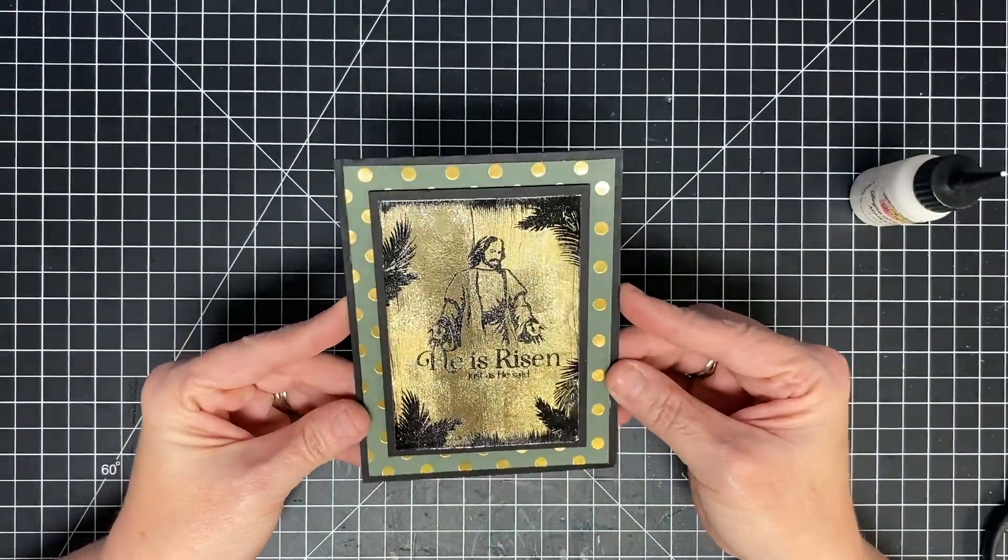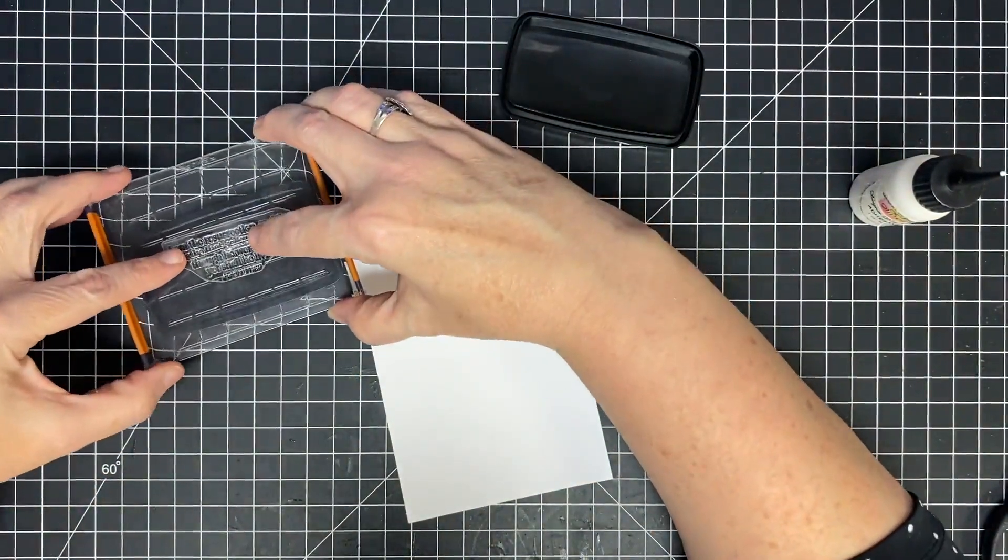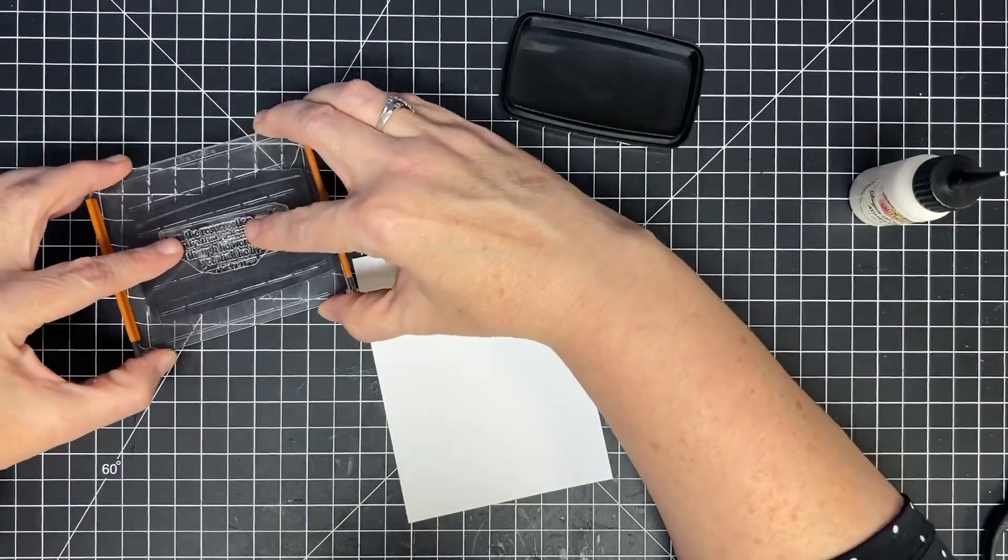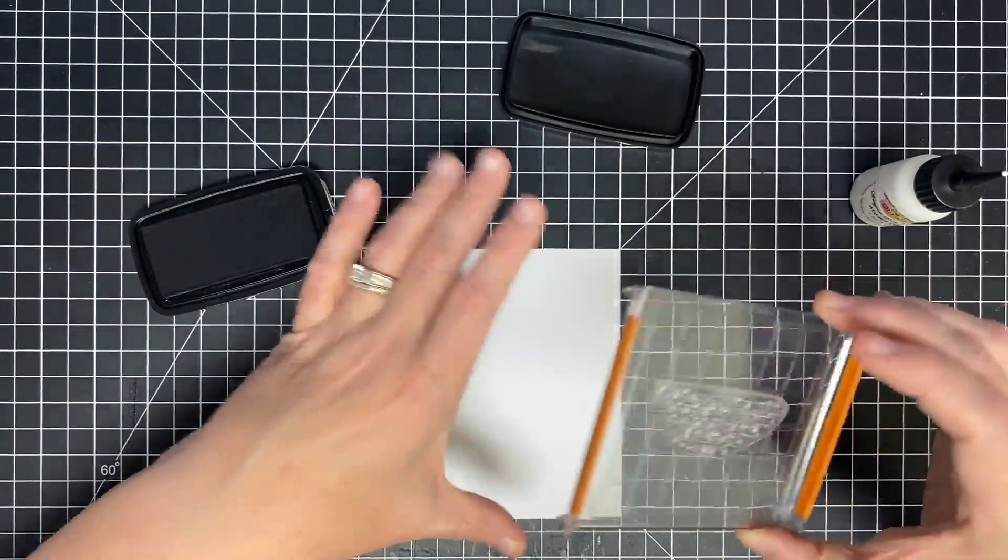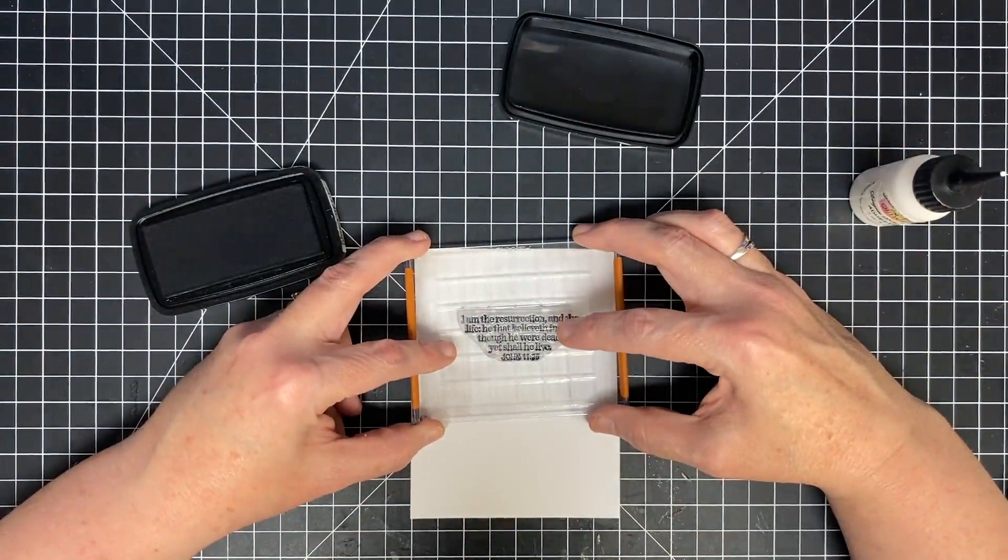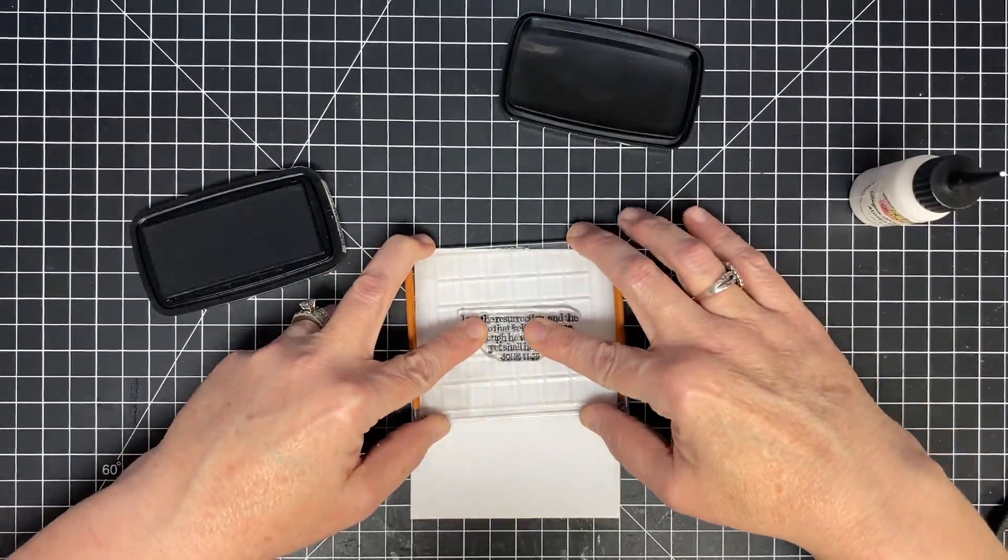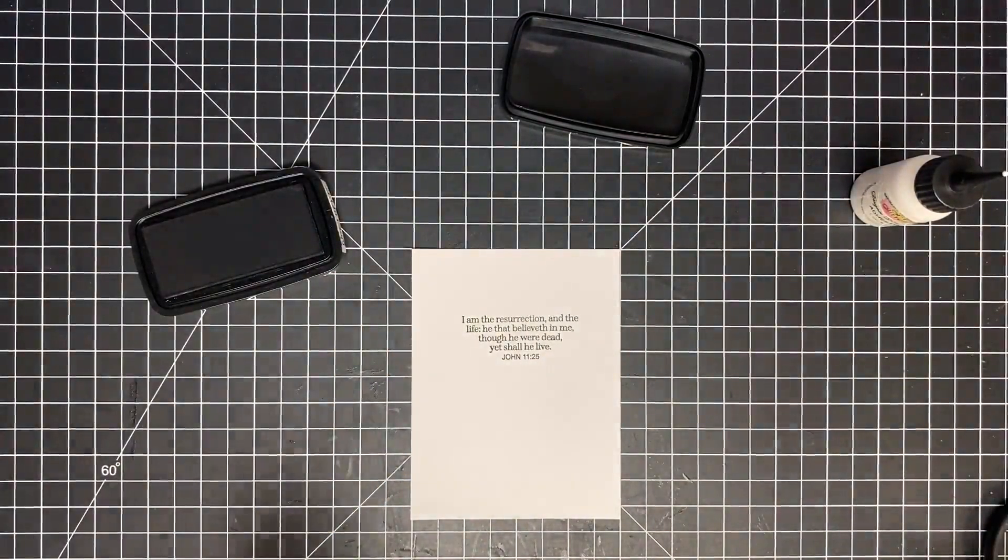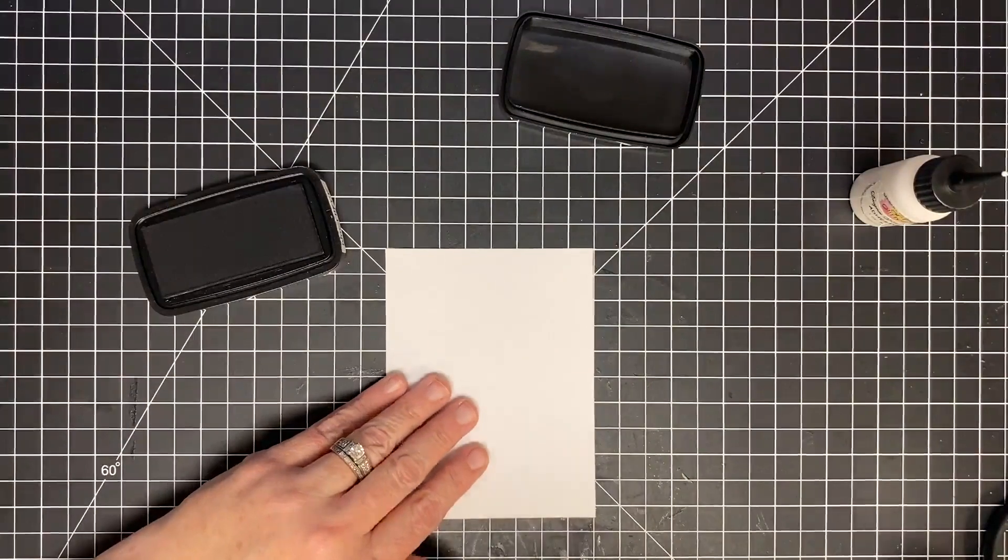And then we're going to put a piece on the inside as well. Now on the inside, I'm just going to use some VersaFine Clair Nocturne ink. And I'm going to stamp the scripture from the set right in the middle. I did not mount this straight on my block, so it's kind of hard for me to get it straight on the page. I'm hoping I got close. Good thing is if I didn't, I can flip it over and do it again. I'm a little crooked. I'm going to flip that over and do it again. We'll glue that part down. Nobody will see it.